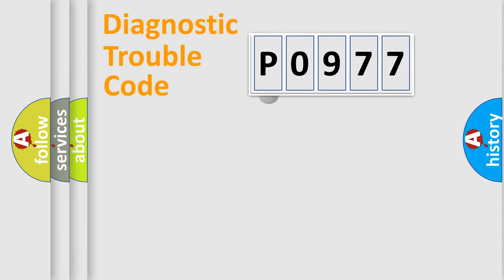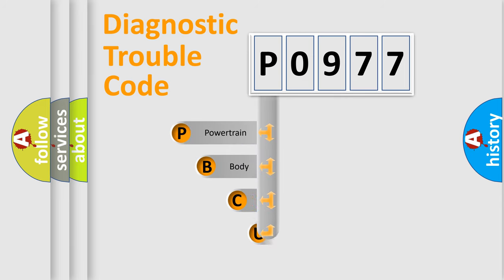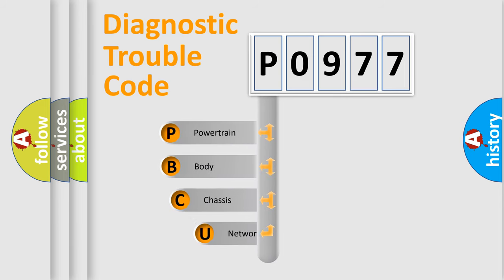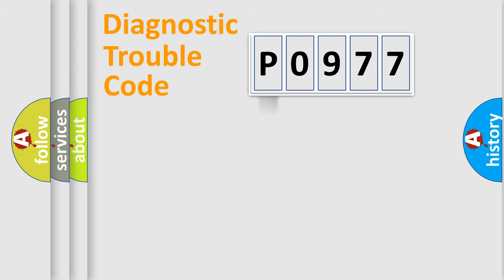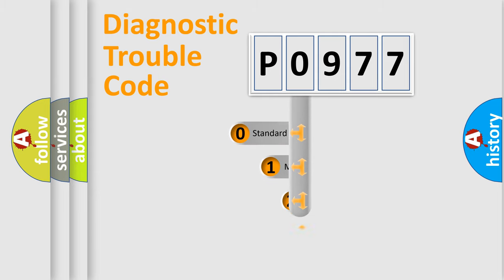First, let's look at the history of diagnostic fault code composition according to the OBD2 protocol, which is unified for all automakers since 2000. We divide the electric system of an automobile into four basic units: powertrain, body, chassis, and network. This distribution is defined in the first character of the code.